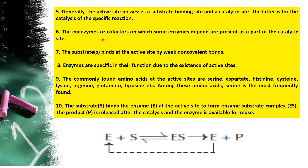The sixth point is: coenzymes and cofactors, on which some enzymes depend, are present at the catalytic site. Some changes in the reaction — such as exchange of hydrogen, oxygen, water molecules, or transfer of functional groups — depend upon coenzymes and cofactors. These coenzymes and cofactors must also be present at the catalytic site, which is where catalysis occurs and the substrate is converted to product.